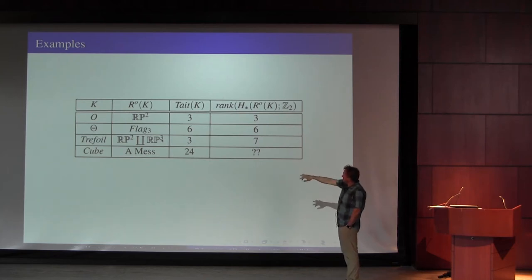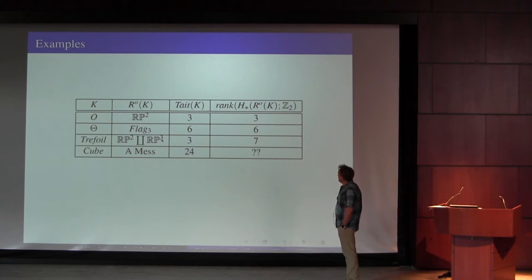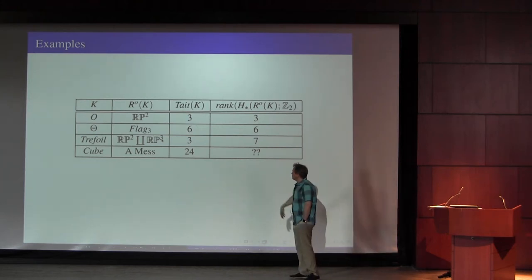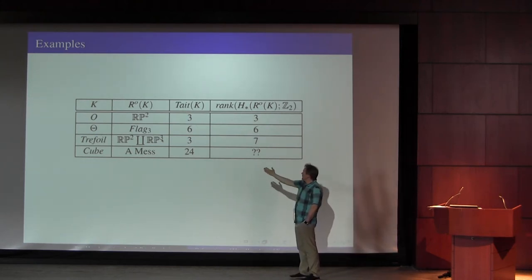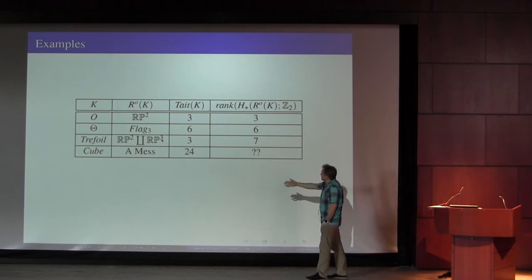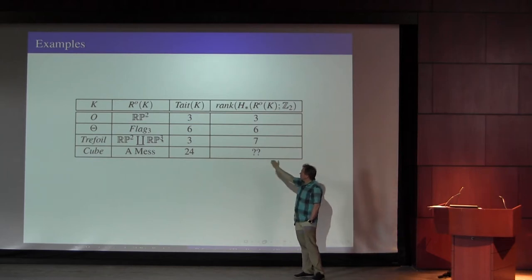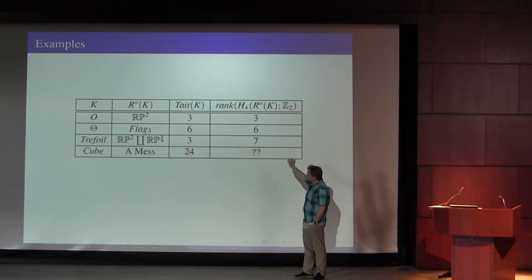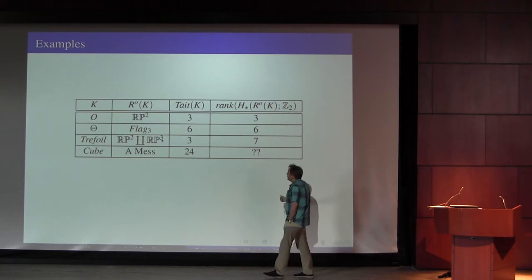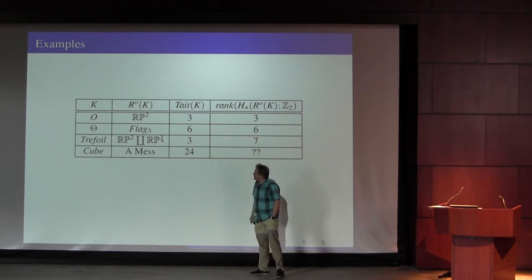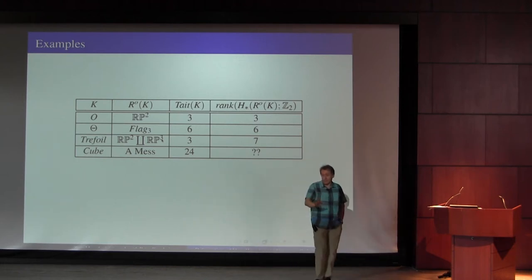The number of Tate colorings is six, and the rank of the homology is six, so it corresponds there. The trefoil, while it's not planar, has an interesting representation variety. Once you go past the planar case, you shouldn't expect the representation variety to have much to do with Tate colorings. The representation variety for something like the one-skeleton of a cube, though, which is planar, is a complicated mess.